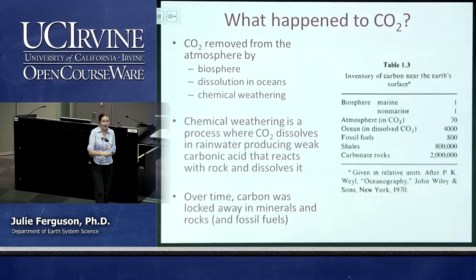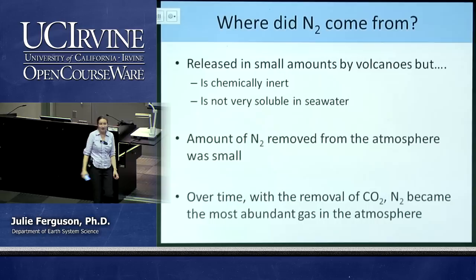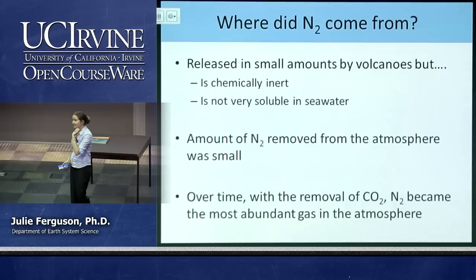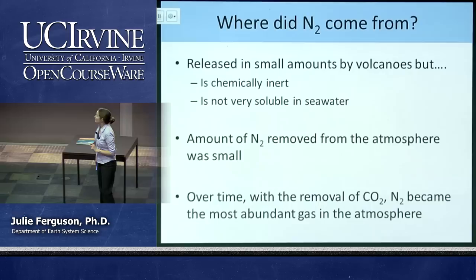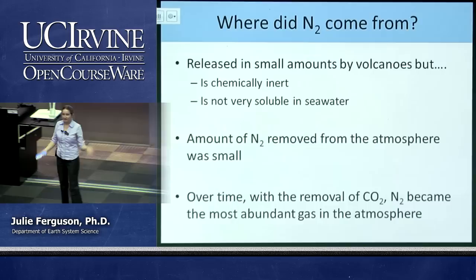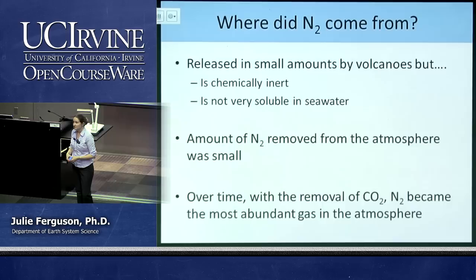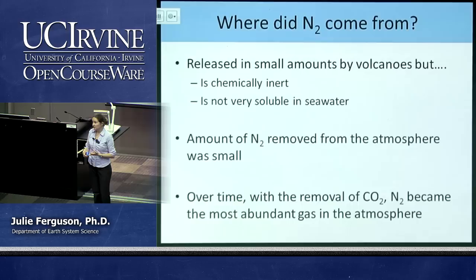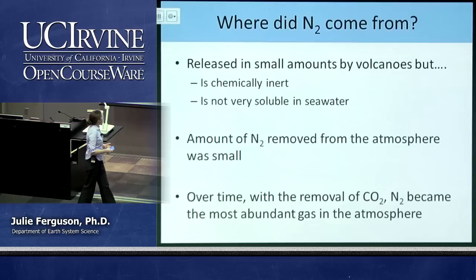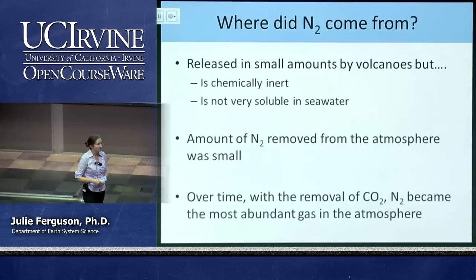Where does nitrogen come from? It is released by volcanoes, but in tiny amounts. The reason it has built up is that once it's in the atmosphere, it's really difficult to remove — it's chemically unreactive. So once it's up there, it takes a very long time for any process to remove it. Life is one way we can get nitrogen from the atmosphere, and lightning is another way to turn that unreactive N2 into something life can use. Nitrogen has built up especially as we removed water vapor and CO2.